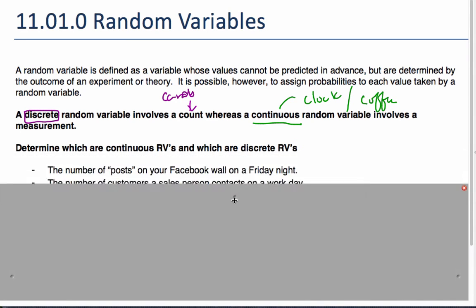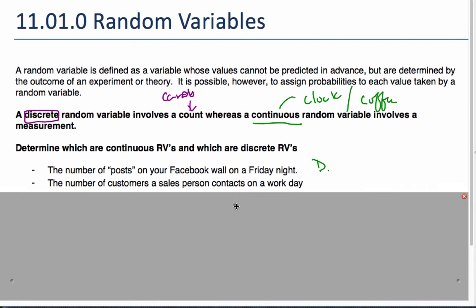Here are some different scenarios. So, think about this. Determine which are continuous random variables and discrete random variables. So, I want you to read this, and then determine for yourself what you think it is. If you said discrete, you are correct, because you're going to count the number of posts. Look at the next one, read that one, make a guess what it's going to be. The number of customers, again, that is going to be a discrete random variable, because we're going to count them. There are specific values of these.